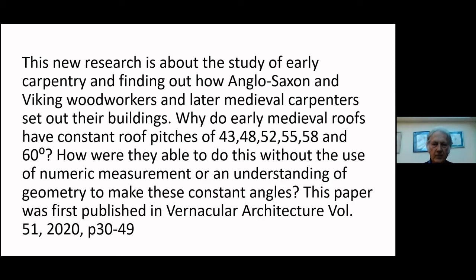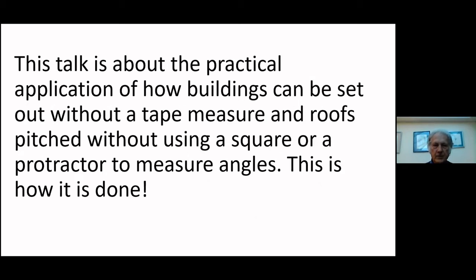Why do early medieval roofs have constant roof pitches of 43, 48, 52, 55, 58 and 60 degrees? How were they able to do this without the use of numerical measurements or an understanding of geometry to make these constant angles? This was first published in Vernacular Architecture in 2020. This talk is about the practical application of how buildings can be set out without a tape measure, and roof pitches without using a square or protractor to measure the angles. This is how it's done.